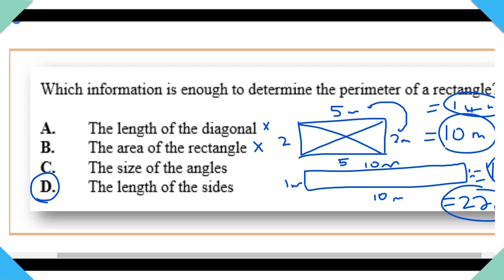That is wrong. And then, option C, the size of the angles. Well, every rectangle has 4 90-degree angles. So this could not be correct. I hope that was clear.